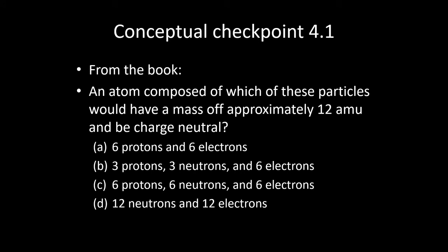All right. So let's look at an example here. This says an atom composed of which of these particles would have a mass of approximately 12 AMU and be neutrally charged. So why don't you go ahead and see if you can work this out. Pause the video for just a second and try to work out which one of those four possibilities would give you a 12 AMU atom with no overall charge.